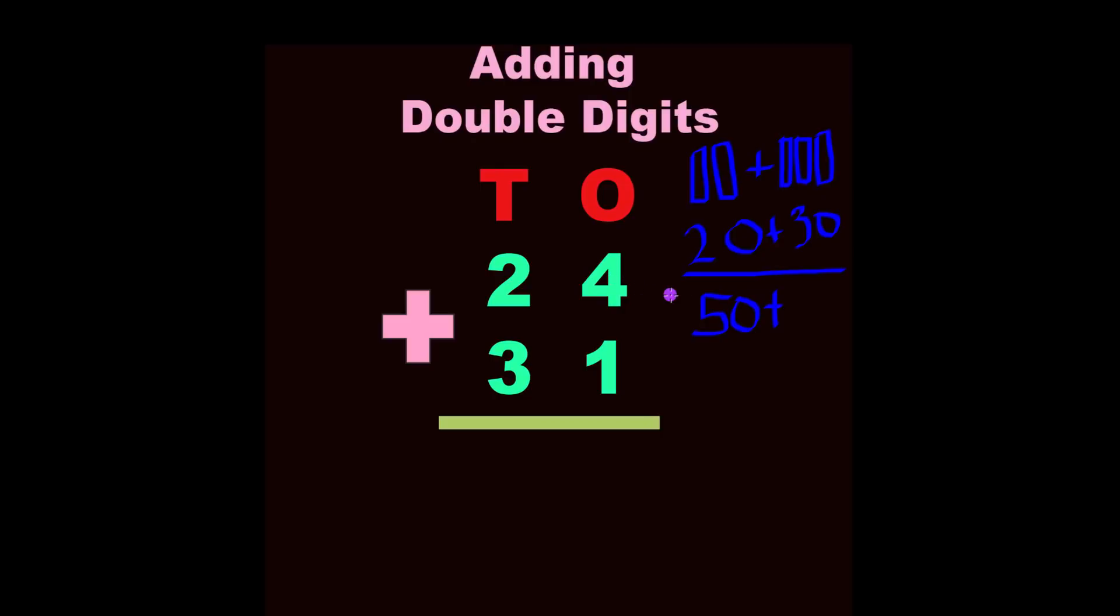Now we're going to add in those ones. We have four ones. So let's just make that one, two, three, four. And then we have another one and one. So let's count. You should know how to count your ones.